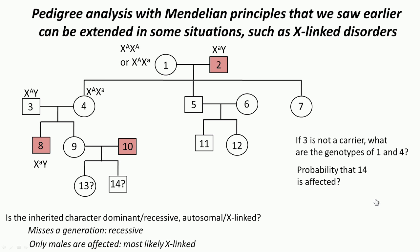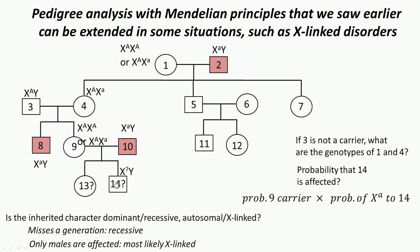What is the probability that 14 is affected? Person 14 is here, so we need to look at the parents. The mother is female, so she is XX, and she is not affected — therefore either homozygous X^A X^A or heterozygous X^A X^a. The father is affected, so he is X^a Y. The probability that this male will be affected depends on whether the X chromosome inherited carries the small a allele, which in turn depends on the probability that the mother is a carrier.